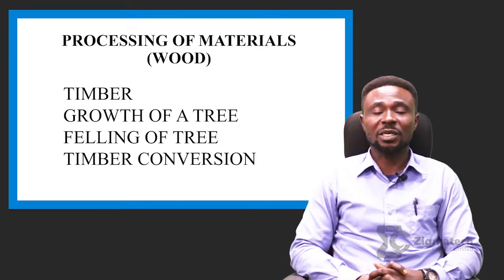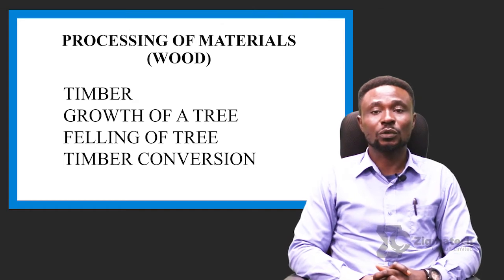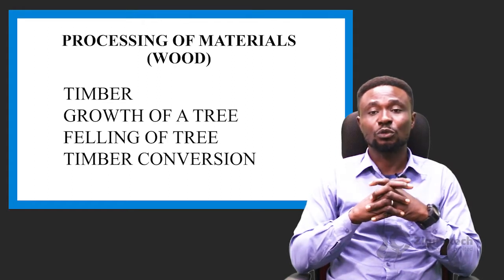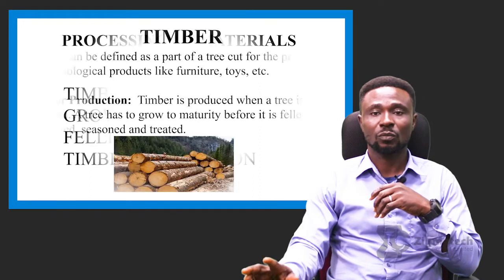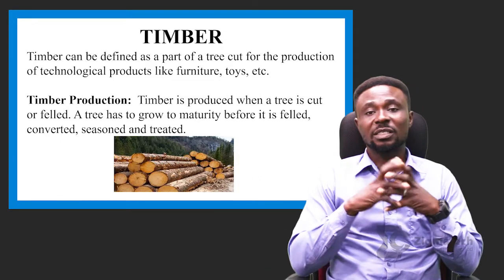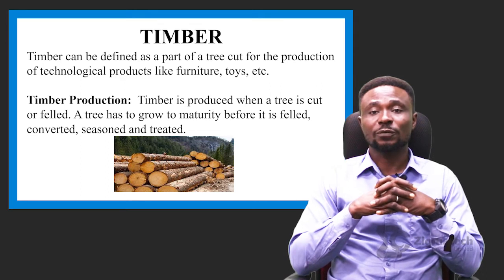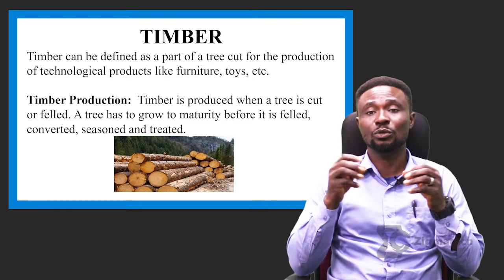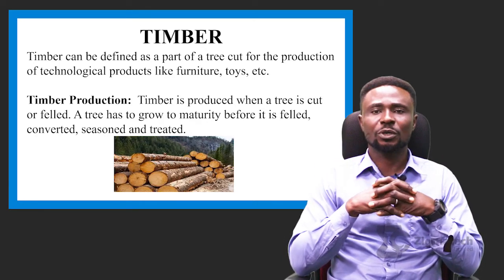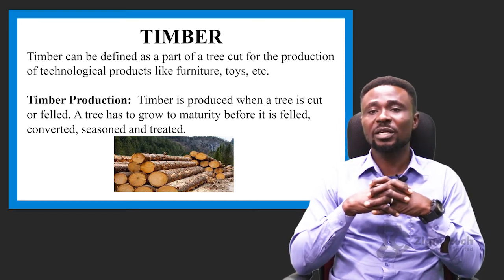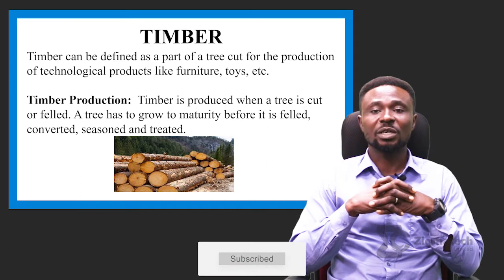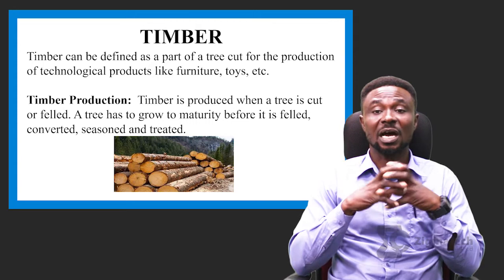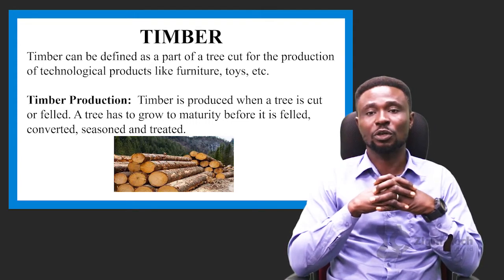Under the processing of materials, we will be looking at timbers, growth of a tree, felling of a tree, and the final topic for today, which will be timber conversion. Timber can be defined as a part of a tree cut for the production of technological products like furniture, such as your table at home or your cabinet in the kitchen. Timber is produced when a tree is cut or felled. A tree has to grow to maturity before it is felled, converted, seasoned, and treated for furniture or industrial purposes.